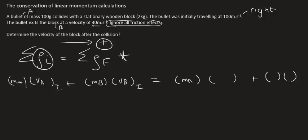And then this will be MA, velocity of A, but that's going to be final. And then final means after the collision, and then MB, VB, and then final.